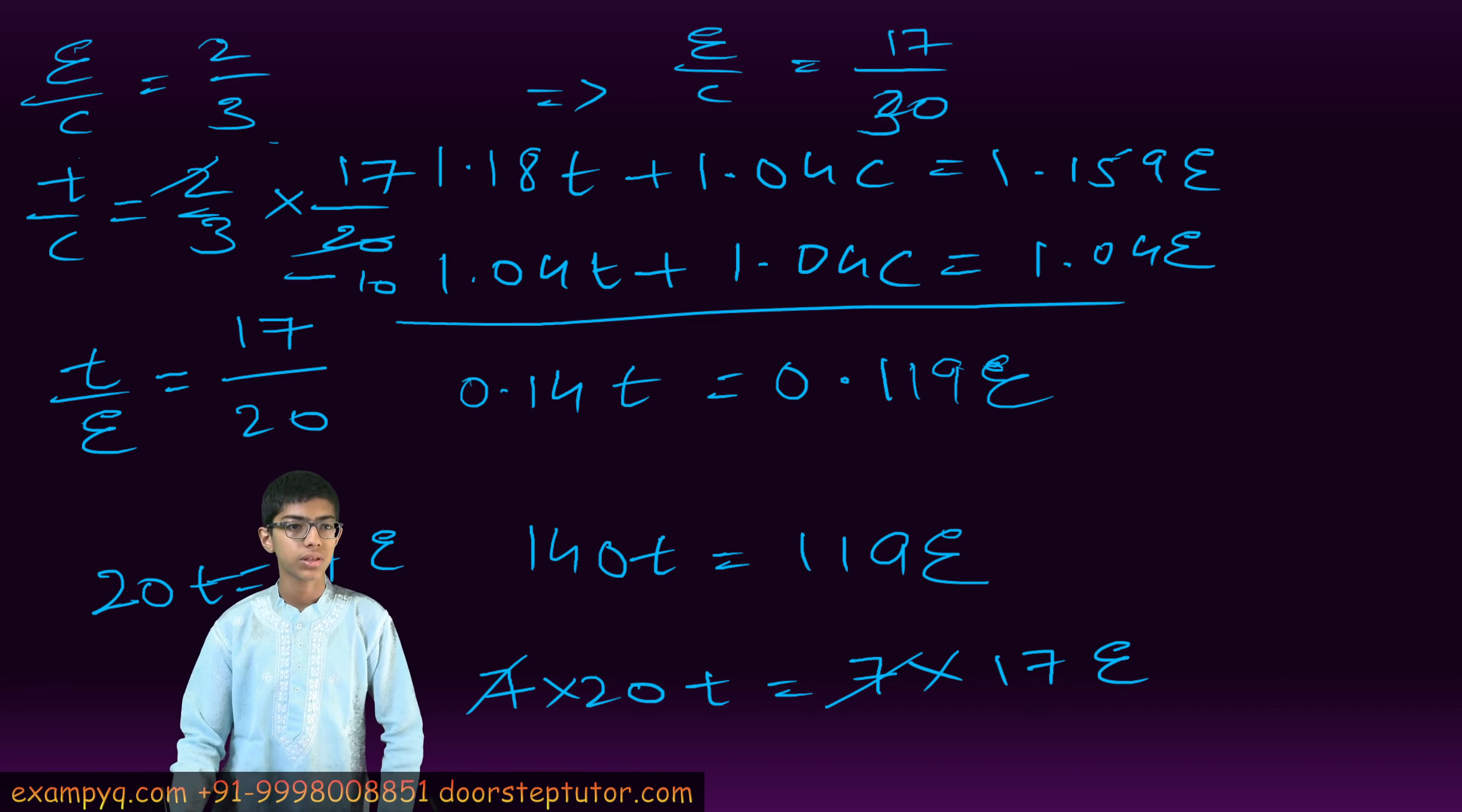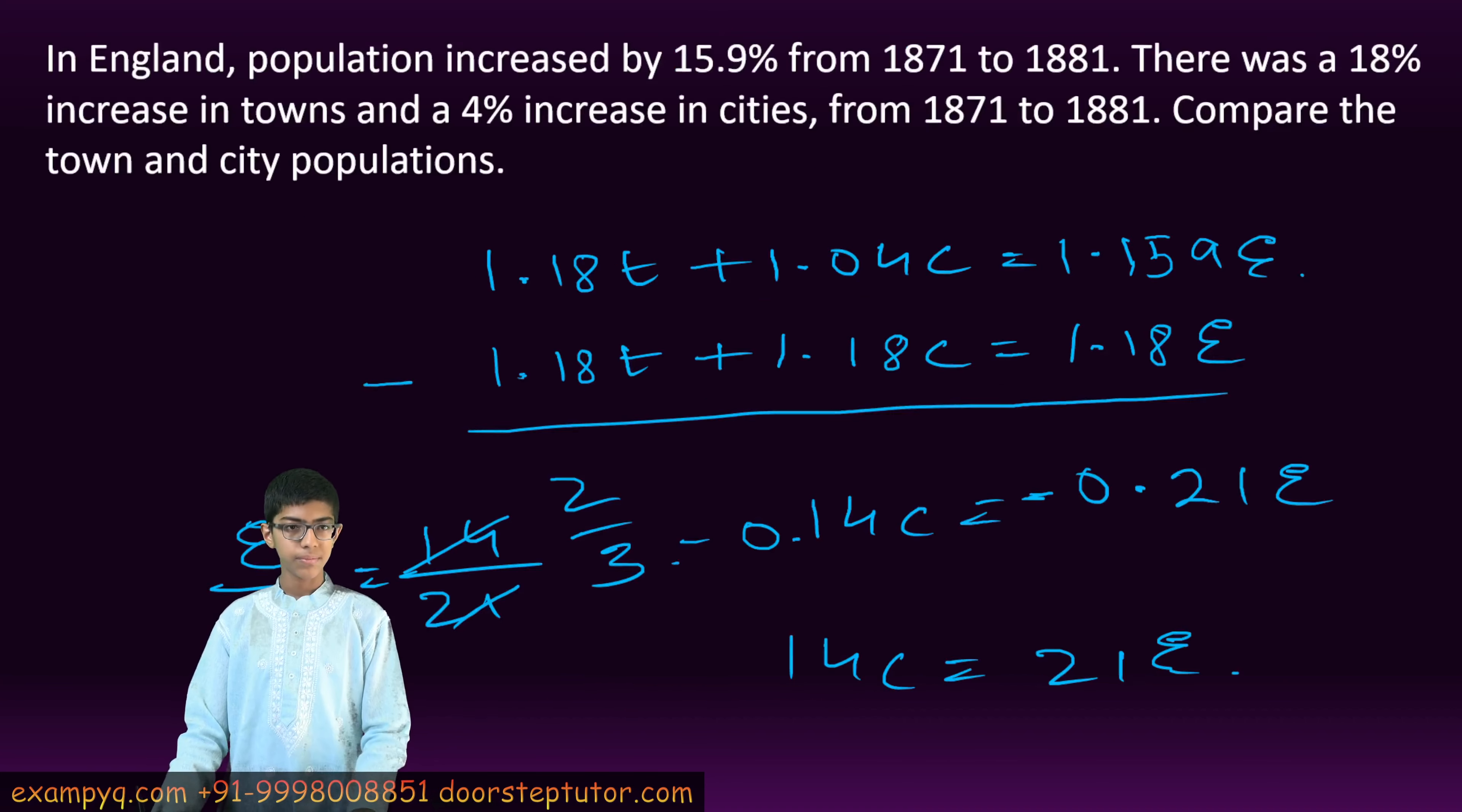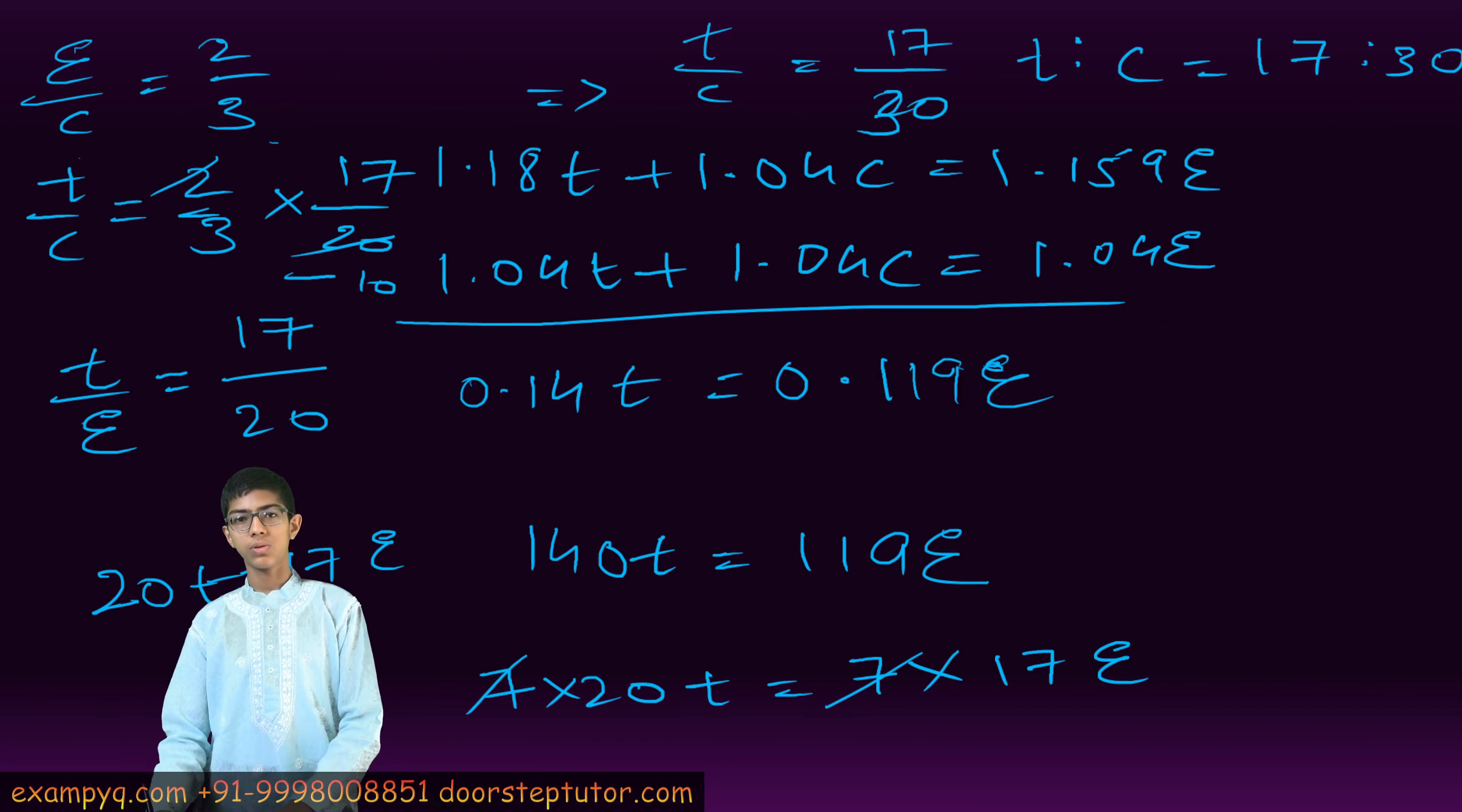Therefore, the ratio of town and city populations, that is T ratio C, equals 17 ratio 30. And as we see, the question asked for the town and city population comparison. So the ratio is 17 by 30. Thank you.